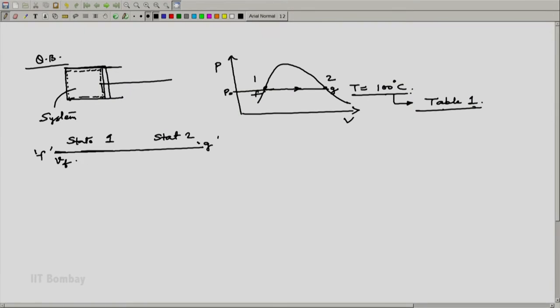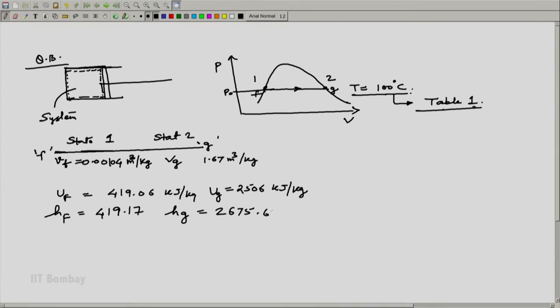VF is equal to 0.00104 meter cube per kg and for state 2, VG is equal to 1.67 meter cube per kg. Then I will get UF is equal to 419.06 kilojoule per kg and UG is equal to 2506 kilojoule per kg. The third property I am concerned about is enthalpy which is HF equals 419.17 and HG equals 2675.6 kilojoule per kg.